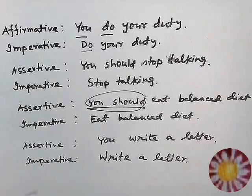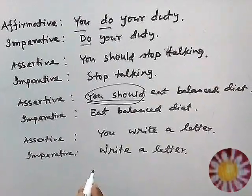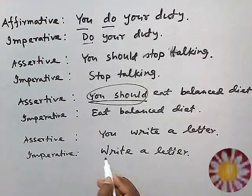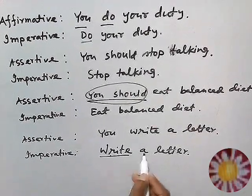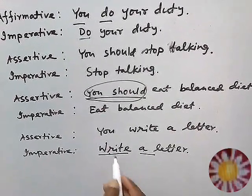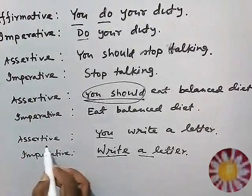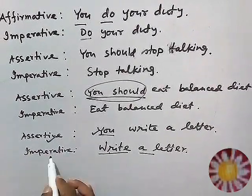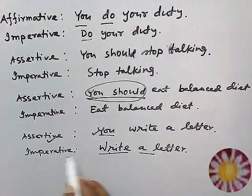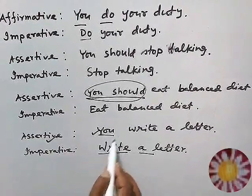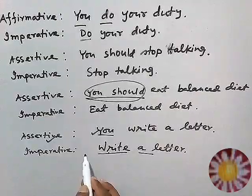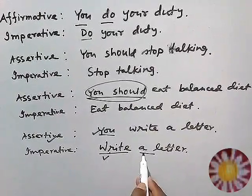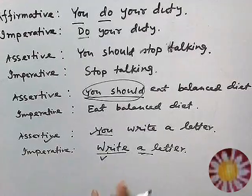We can easily identify the sentence that expresses any request or advice, and we have to write it as an imperative sentence. The structure is verb plus object — the subject will not be used. Subject is used in assertive sentences, but when we change the statement to imperative, we should not use the subject. So without subject: verb plus object.